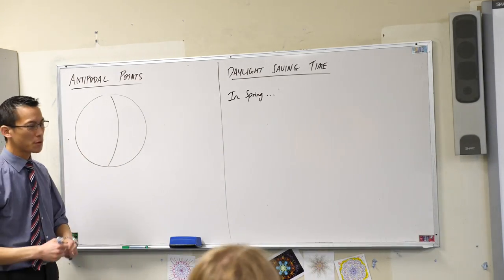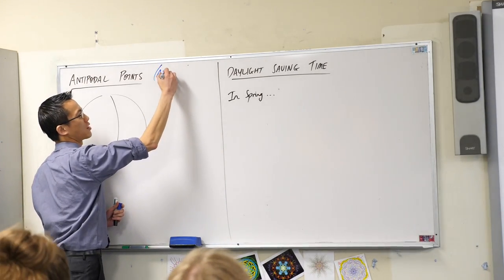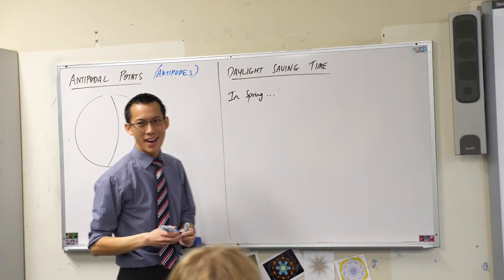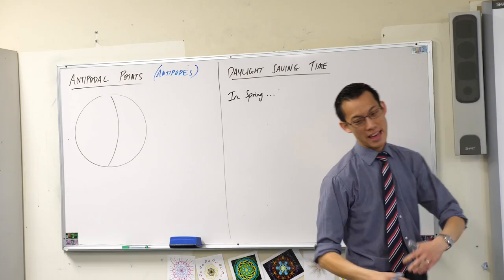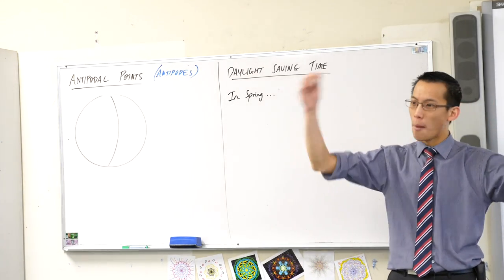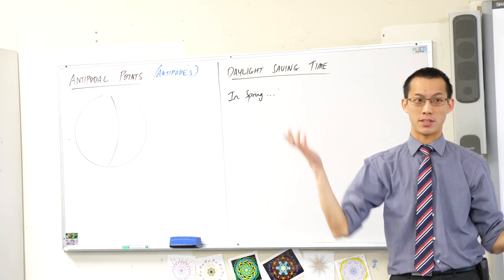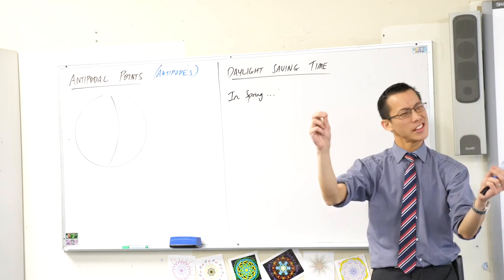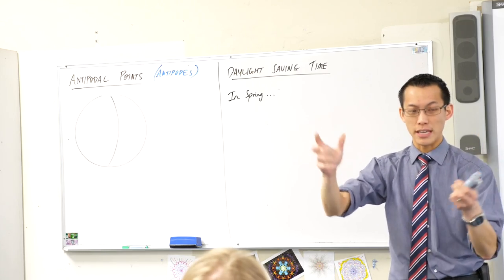Antipodal points, or also called just antipodes, are the simplest way I can say it: points that are on exactly the opposite sides of a sphere. They're a pair of points that are on exactly the opposite sides of a sphere.